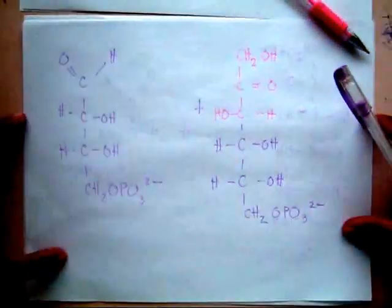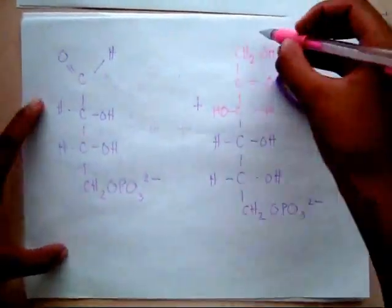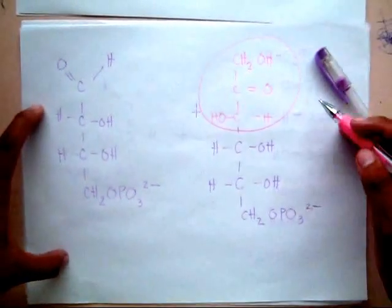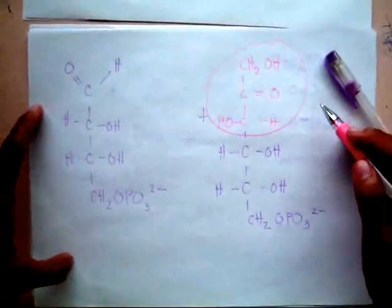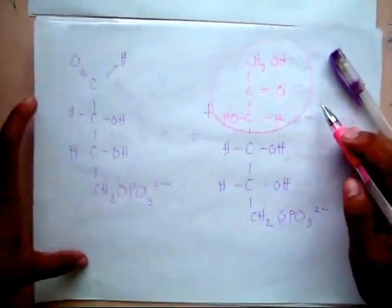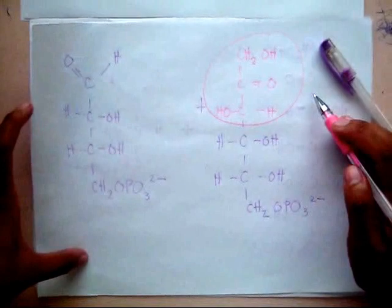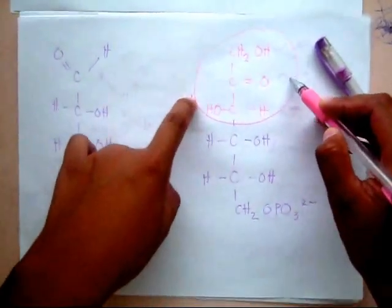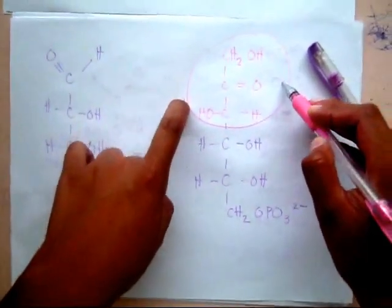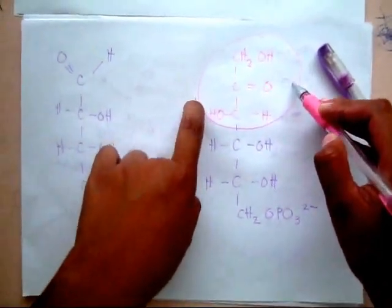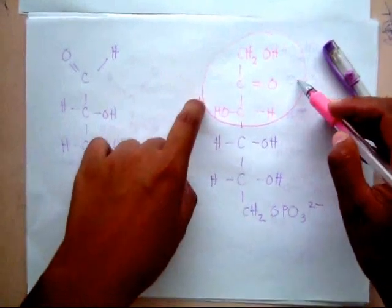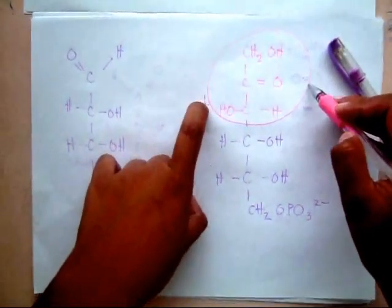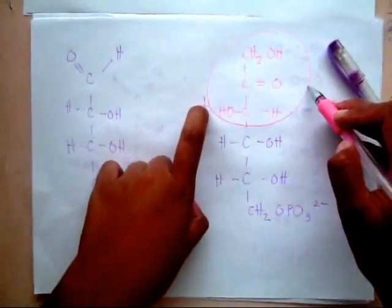In reaction two, a three-carbon unit is transferred from the ketose to the aldose by the enzyme transaldolase. This three-carbon unit from the sedoheptulose-7-phosphate is transferred to the glyceraldehyde-3-phosphate.